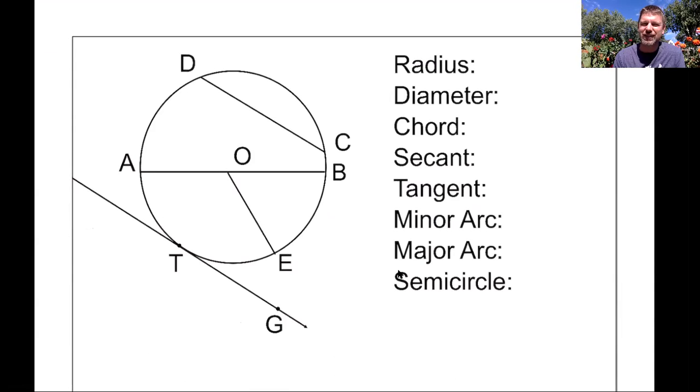One is radius. Radius clearly connects from the center to an edge of a circle. Hopefully you know that, like from here to there. So OB would be a radius, so would OE, so would OA. Those are all radii. I'm just going to put one example down here. I will put down OB. So OB would be an example of a radius.